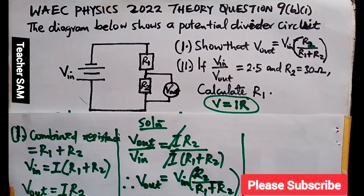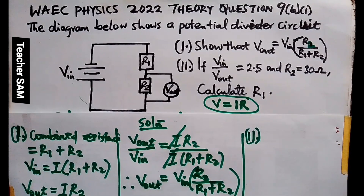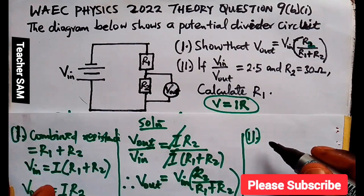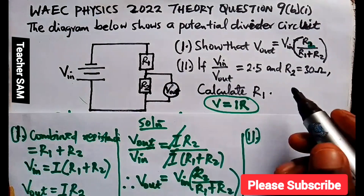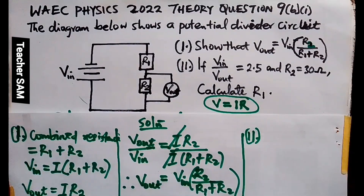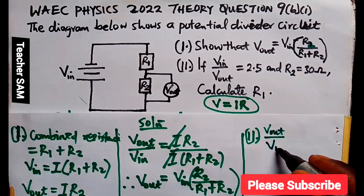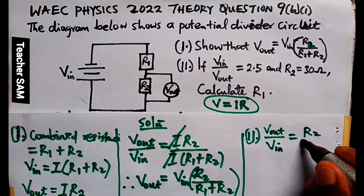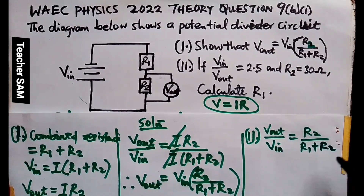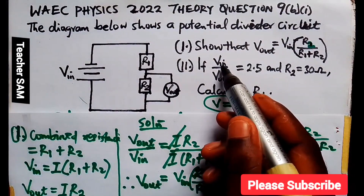Now let's look at Part II, which asks us to find R1. We are given that V_in over V_out equals 2.5 and R2 equals 30 ohms. From what we calculated before, we know that V_out over V_in equals R2 all over R1 plus R2.